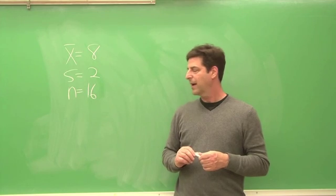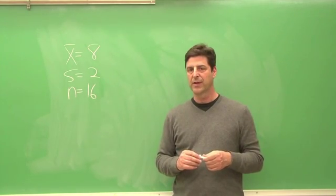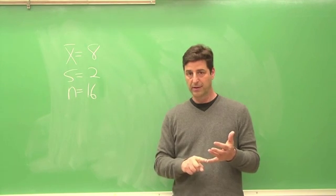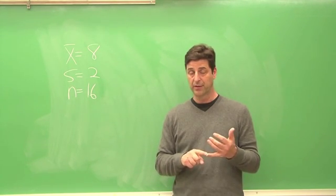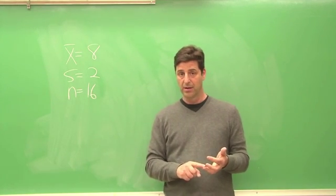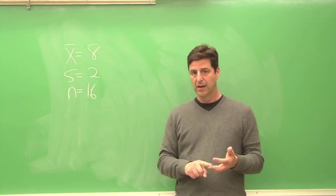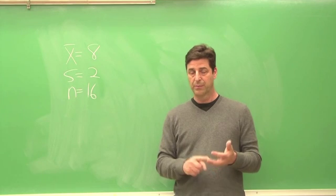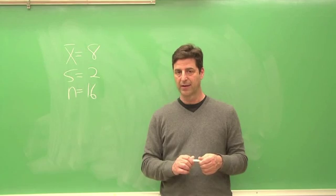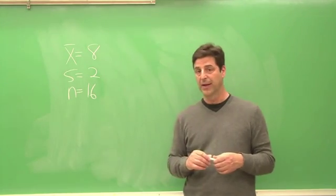To calculate a confidence interval for the mean, you need three pieces. You need the sample statistic, in this case the mean. You need a standard error of the mean, and you need a critical value from the appendix, in this case appendix B.